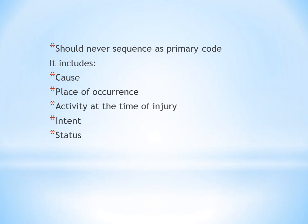The first and most important guideline of this chapter is that external cause codes should never be sequenced as the primary code. The first code should always be the injury or health condition of the patient. This chapter's codes should never come as a first code — they should always come after the injury code or health condition code.